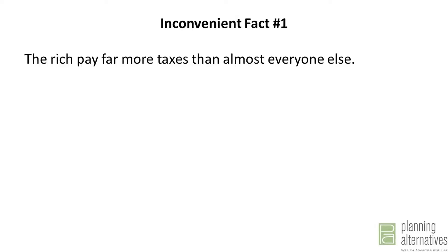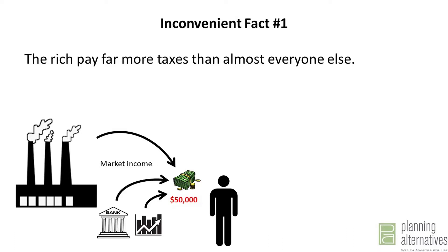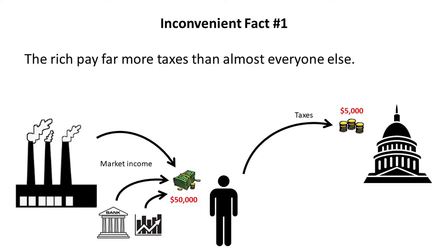Inconvenient fact number one: the rich pay more taxes than anyone else. Consider a person who earns $50,000 a year — some of it from wages, some of it from interest on savings, some of it from return on investments. The government taxes this person $5,000, and that's all federal taxes combined: income taxes, payroll taxes, capital gains, all of it.